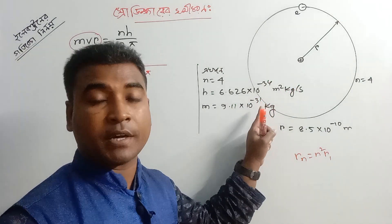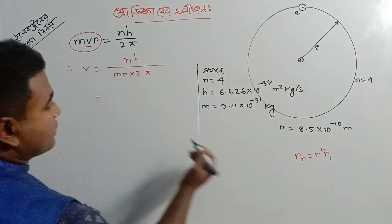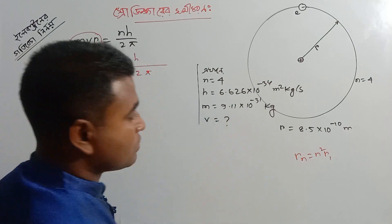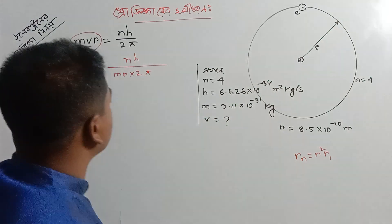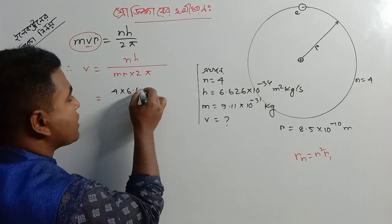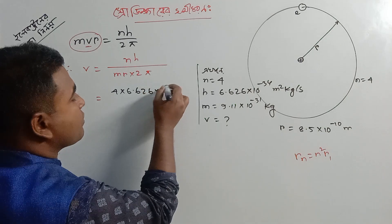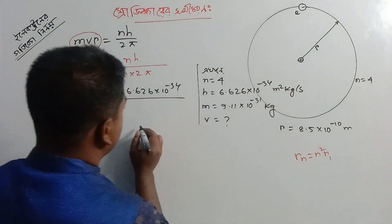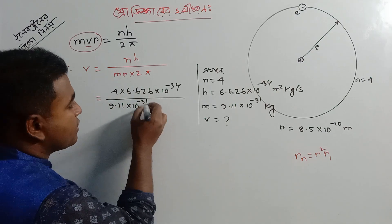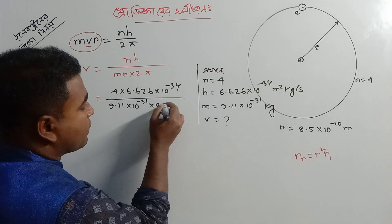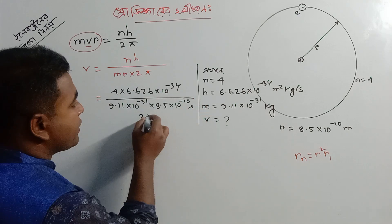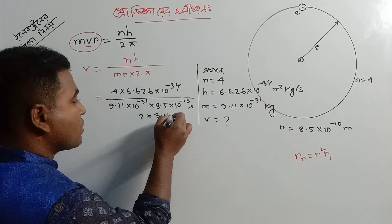It is minus 28. R is equal to 8. So the calculation is: 4 into h, which means 6.626 into 10 to the power minus 34, divided by mass 9.11 into 10 to the power minus 31, into 8.5 into 10 to the power minus 10, into 2 into pi, which means 3.1416.